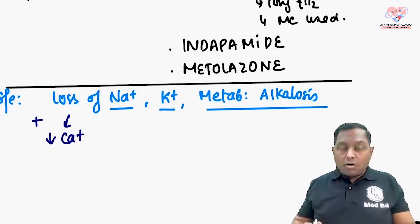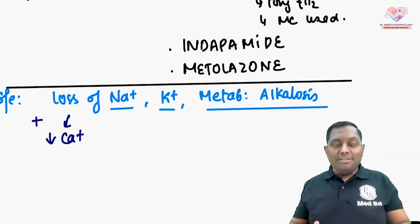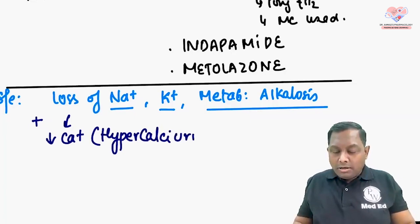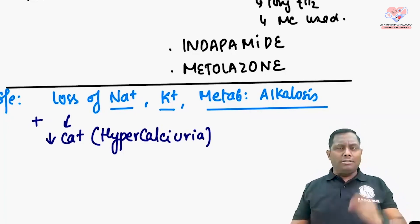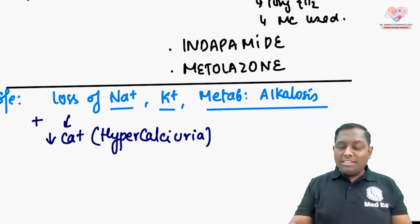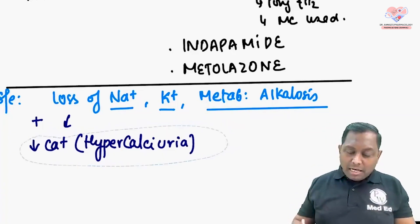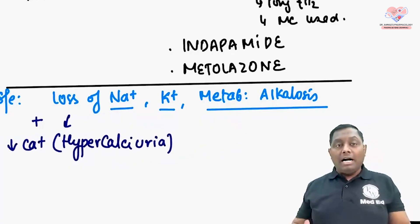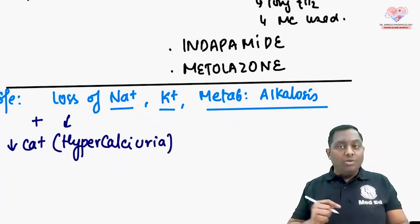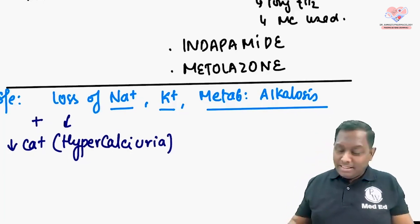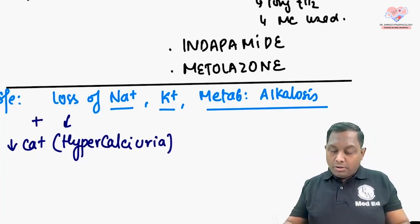Because loop diuretics cause calcium to be excreted in the urine, this is called hypercalciuria — more and more loss of calcium. After loop diuretics, thiazide diuretics — beyond the common side effects of hyponatremia, hypokalemia, and metabolic alkalosis — also increase uric acid levels, which can precipitate gout.